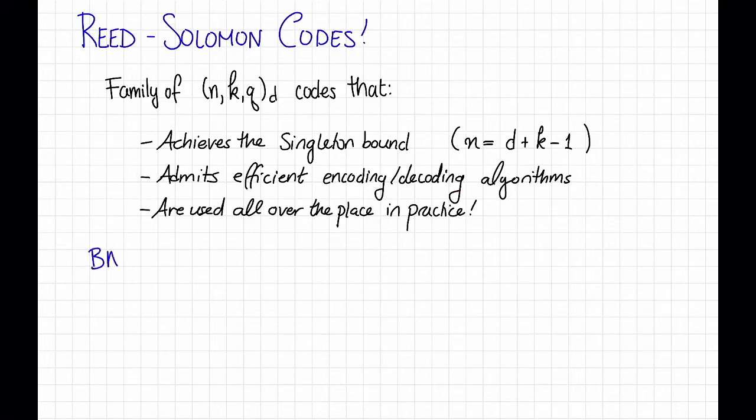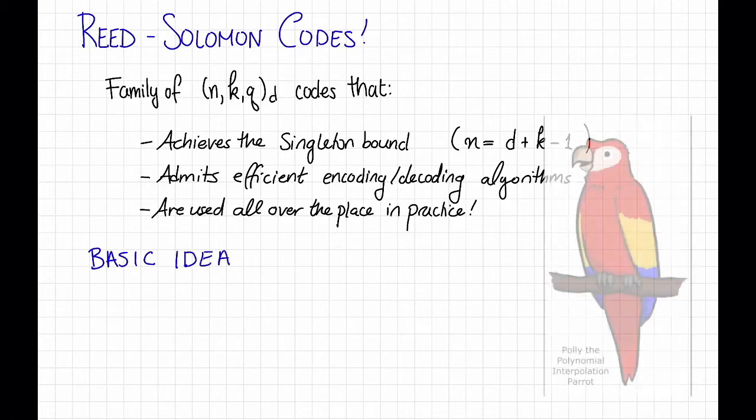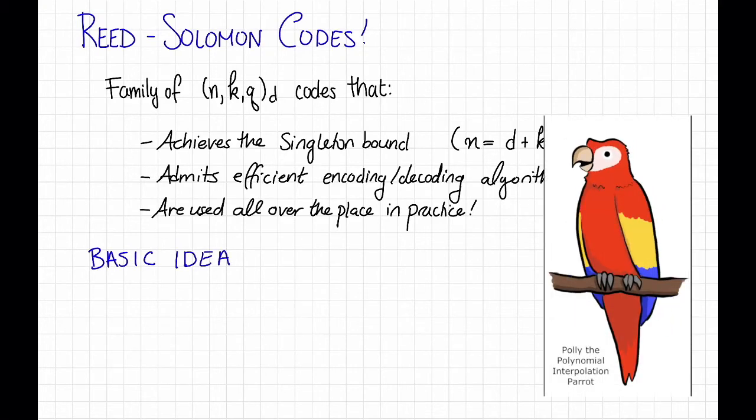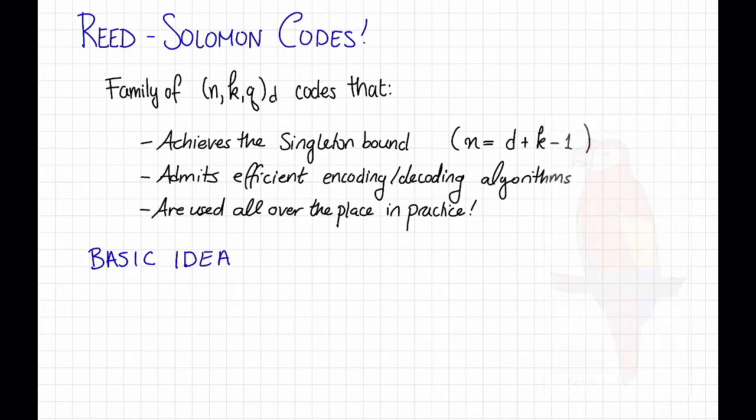The basic idea behind Reed Solomon codes, which we've seen before, is that low-degree polynomials don't have too many roots. Thanks, Polly. Yeah, so the basic idea is, as Polly the polynomial parrot says, low-degree polynomials do not have too many roots.